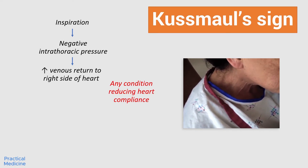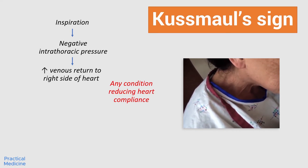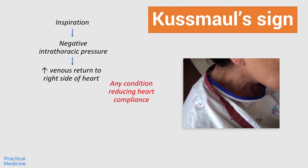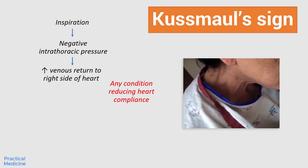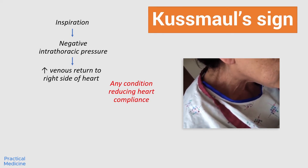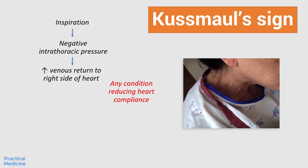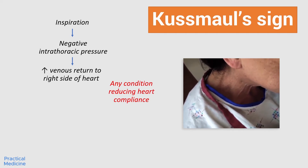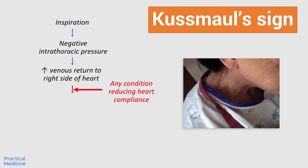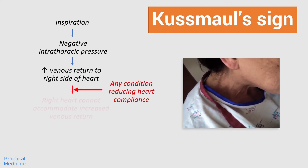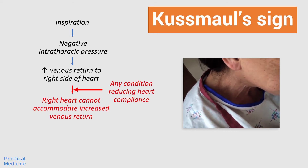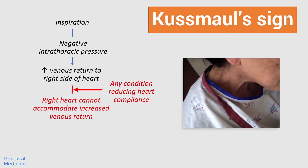This can happen because of a poorly compliant myocardium, a restricting pericardial pathology, or it may also occur in any extra-cardiac factor which restricts cardiac compliance during diastole. This impaired filling of the right heart cannot accommodate the increased blood returning during inspiration.